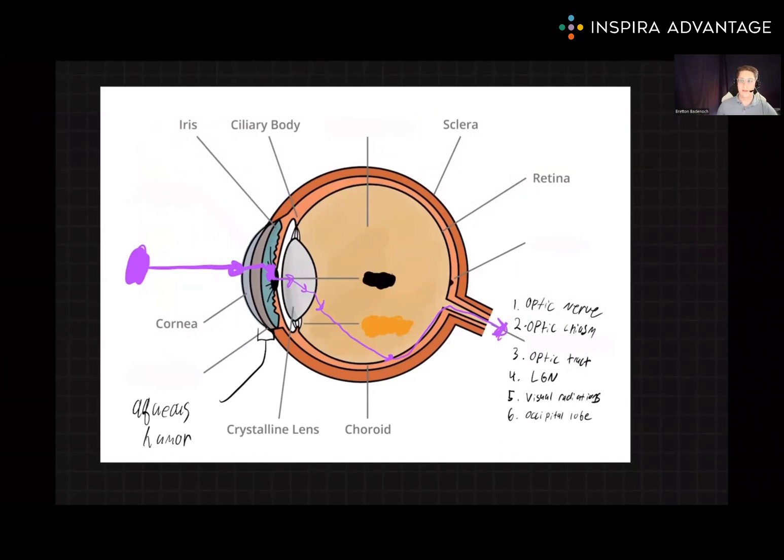In our next video on the eye, we'll dive deeper into some of the eye physiology as well as how signals are transduced. But for this video, you should now have an understanding of the anatomy of the eye and the pathway light takes to ultimately end up in the occipital lobe.